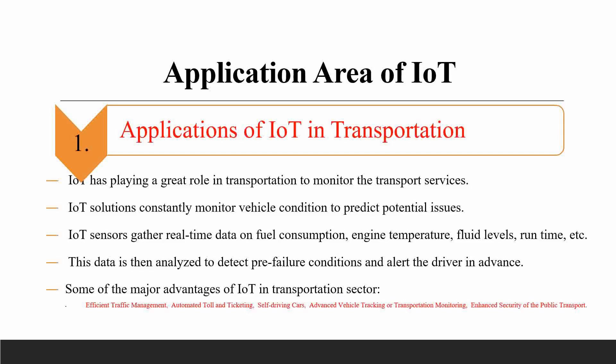The data is analyzed to detect failure conditions and alert the driver in advance. Some major advantages of IoT in the transportation sector include efficient traffic management, automated toll-in, self-driving cars, advanced vehicle tracking, transportation monitoring, and enhanced security of public transport.